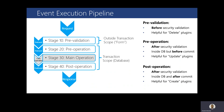Stage 10 is useful for scenarios where you want to validate data before the database transaction starts. For example, if you want to validate whether a user entered a correct phone number or email address, you do not need the plugin to execute after the database transaction starts. You can do this validation before the database transaction has started by registering your plugin at pre-validation, Stage 10.